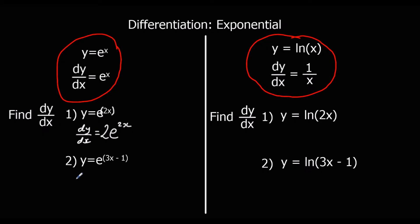For question 2, we leave it exactly the same because we're differentiating e. Then we multiply by the bracket differentiated, which in this case is 3. So the answer is 3e to the power of 3x minus 1.